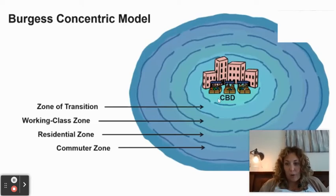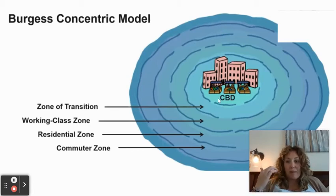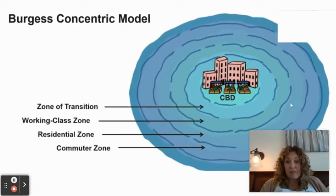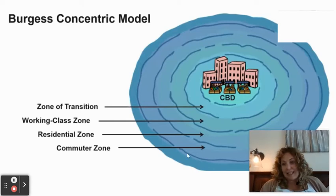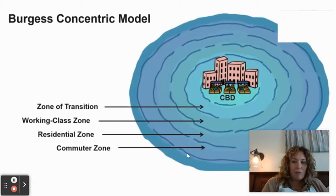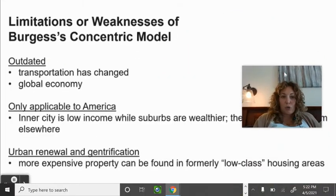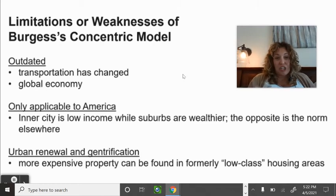Working class people worked in the central business district, probably didn't have cars, so they relied on street cars or public transit or walked — which is why they lived not too far from the city. Then comes the residential zone with nicer housing, and finally the commuter zone for those who could afford a car or transportation to live far from the city but commute in each day.